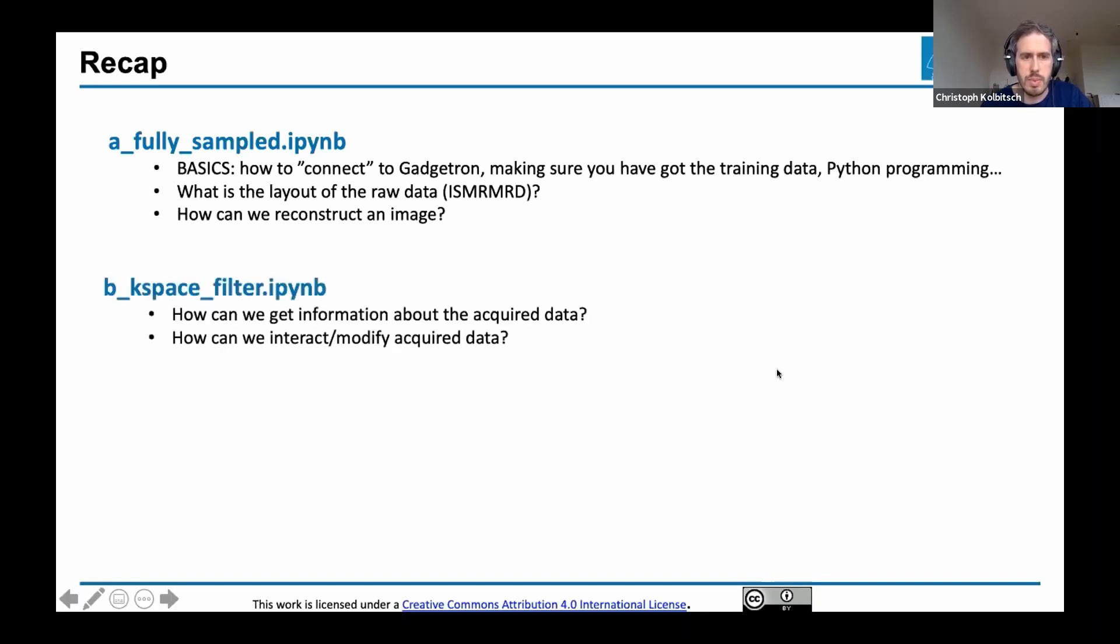We also had the k-space filter notebook. The main learning objective was to see that you can interact with the raw data, not at each iteration of an algorithm as Chris showed, but along the reconstruction pipeline. We used Gadgetron to read in the data, got our raw k-space data, modified and filtered it, then passed it on to Gadgetron for reconstruction.